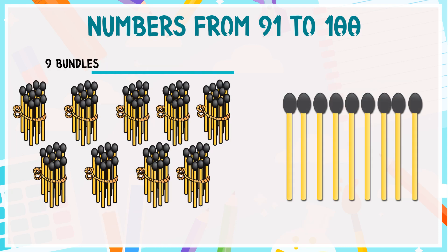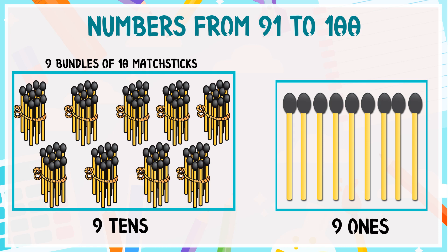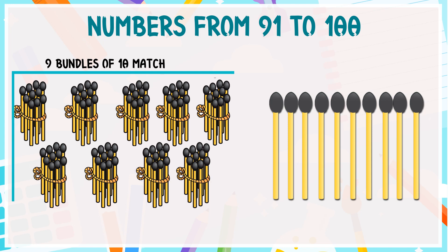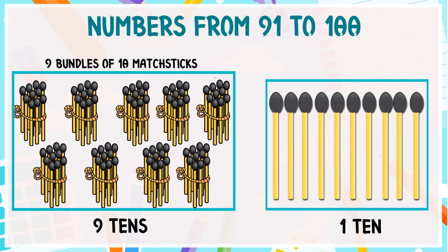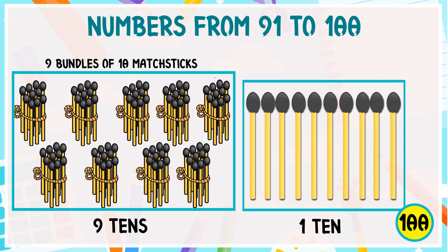These are nine bundles of ten matchsticks in each, so it is nine tens and nine ones, so nine tens and nine ones is equal to 99. These are nine bundles of ten matchsticks in each, so it is nine tens, and one more ten makes 100. Well done, kids! For more educational videos, subscribe to Catrick Kids TV.